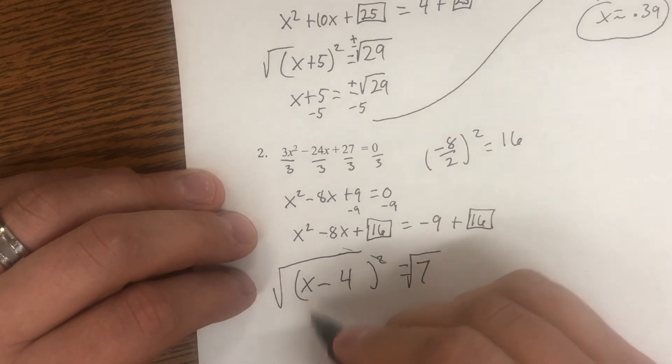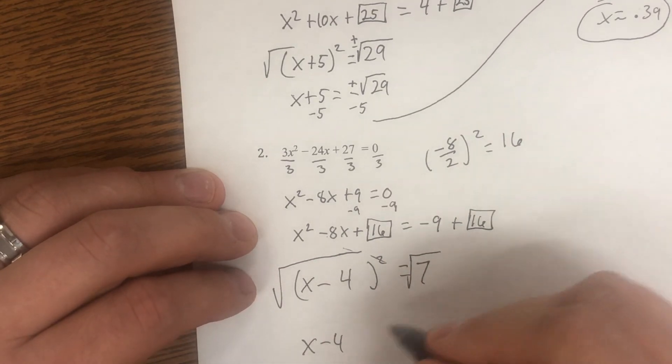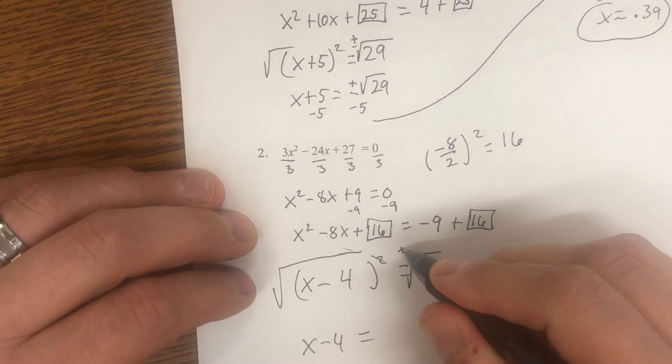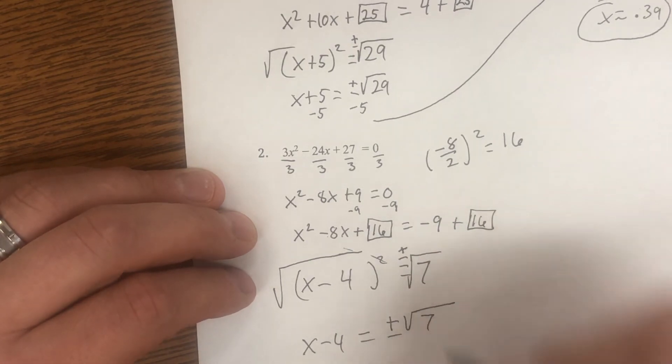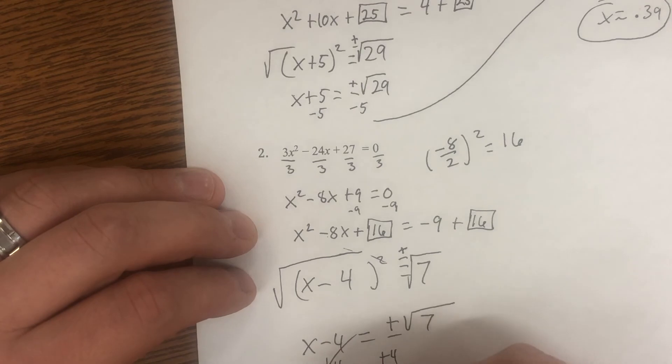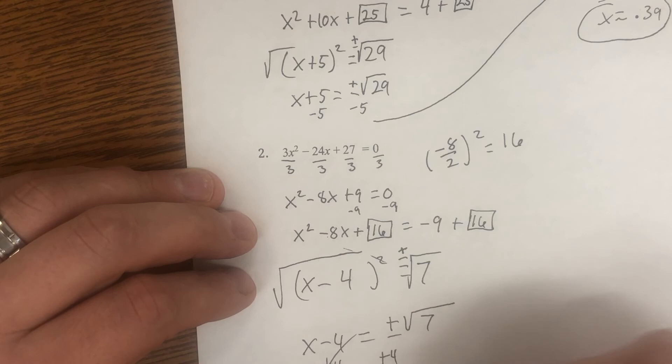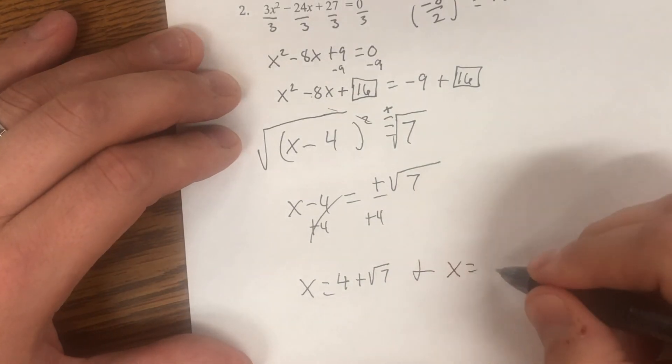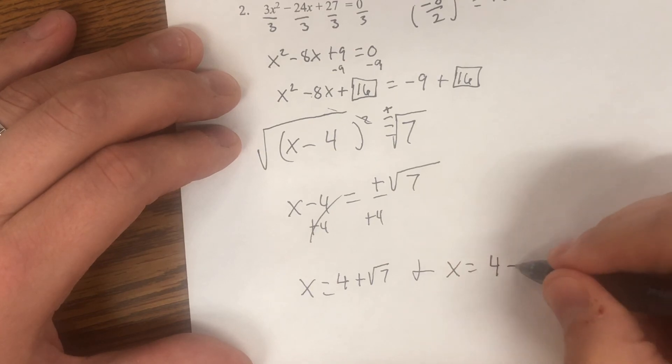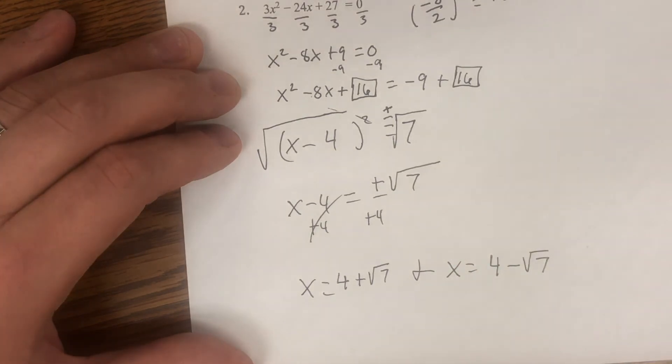So x minus four equals plus or minus, don't forget that plus minus, plus or minus the square root of seven. Add the four to solve for x and find both solutions. x is equal to four plus the square root of seven, and x is also equal to four minus the square root of seven.